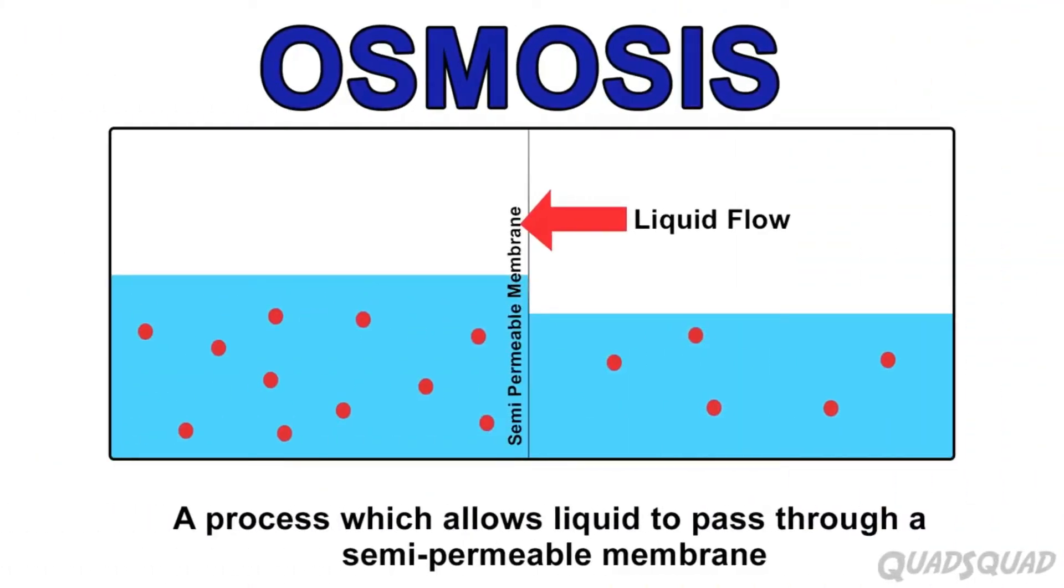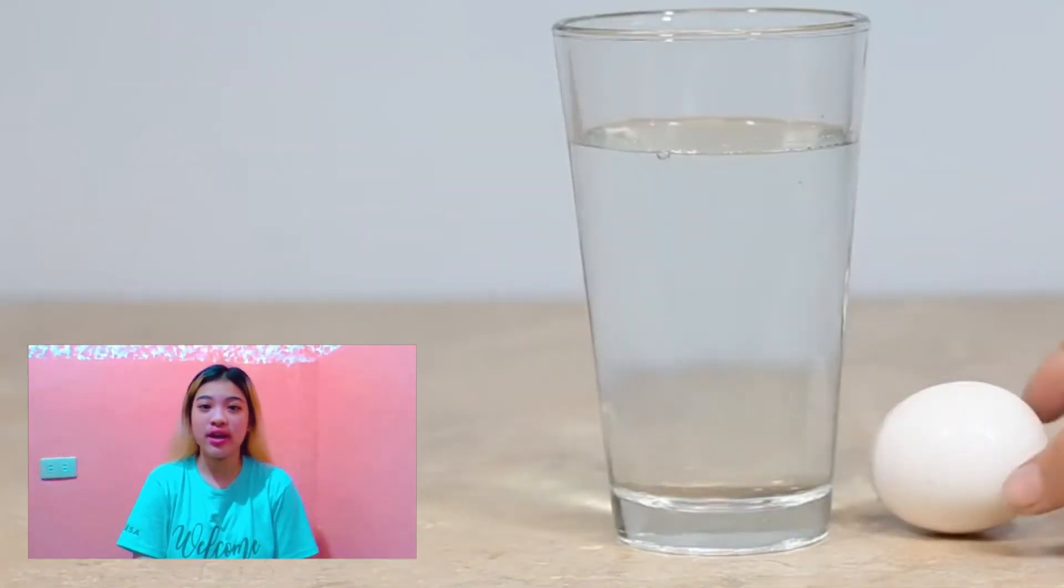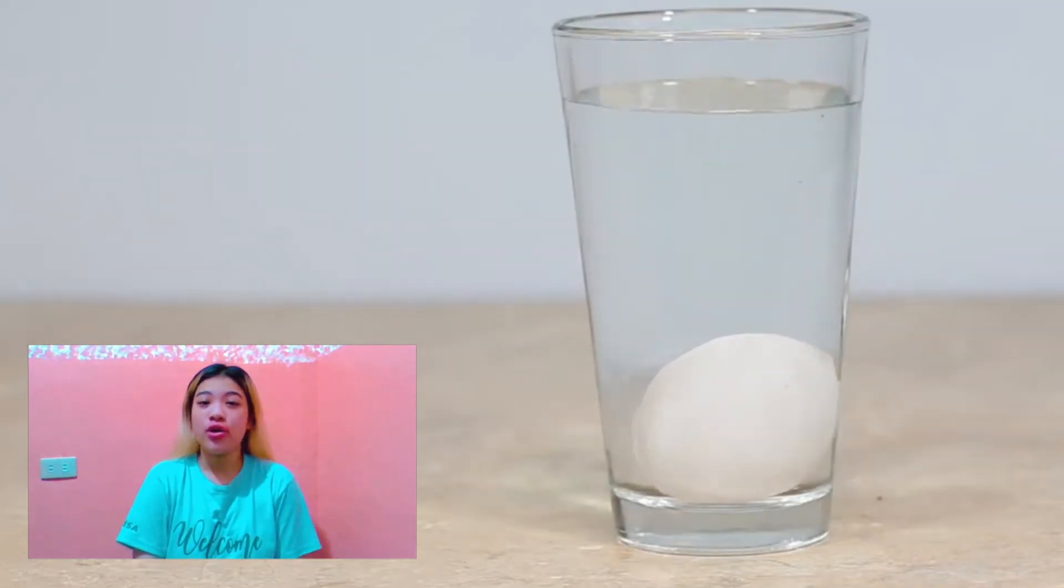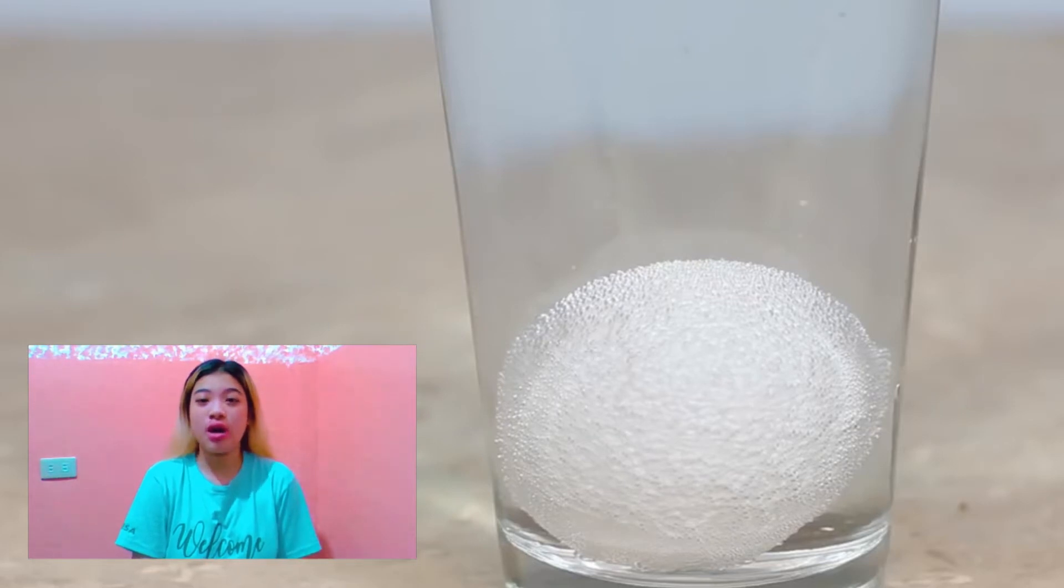Osmosis is a process that lets liquid pass through a semi-permeable membrane. A semi-permeable membrane is a layer that only certain molecules can pass through. Now, we are going to do an experiment about osmosis through an egg. First thing we need to do is remove the shell. In order to do that, we have to put it in a cup of vinegar.